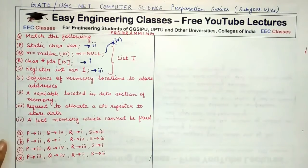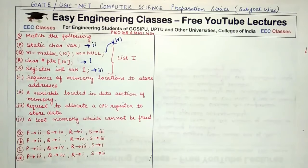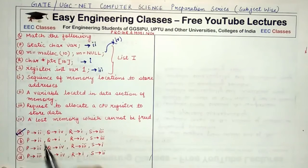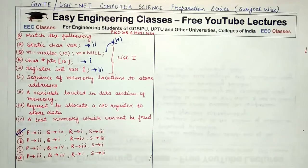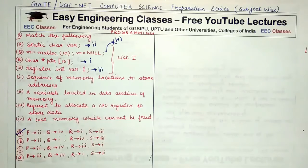So the correct matching is: P matches 2, Q matches 4, R matches 1, and S matches 3 — making option A correct. In these types of questions, don't get confused by reading all options from both lists first. You should read one list, set in your mind what each statement is doing, and then read the second list to match.